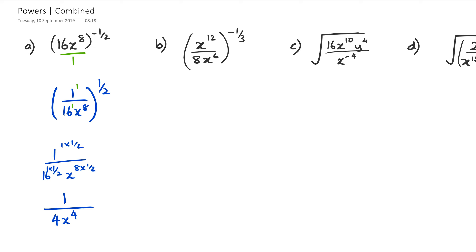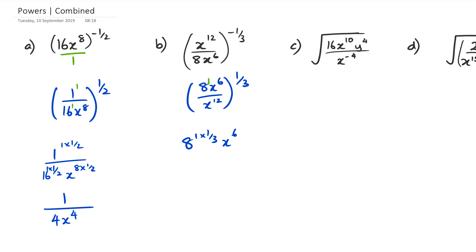Following that same idea in the second question, we're going to rewrite this as 8x to the power of 6 divided by x to the power of 12, and that's now raised to the power of positive third. Remember that 8 also has a power of 1, so I'm going to write this as 8 to the power of 1 times a third, x to the power of 6 times a third, over x to the power of 12 times a third.